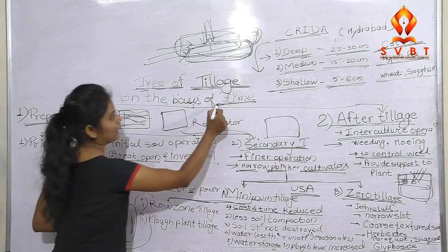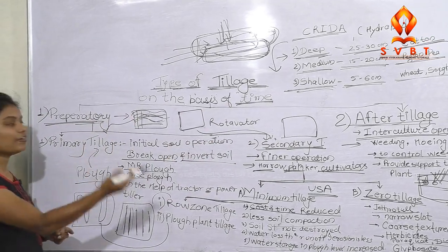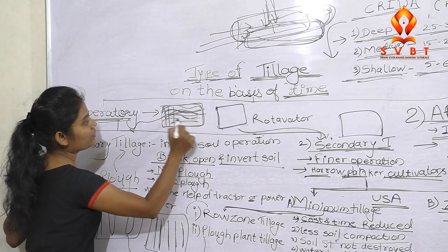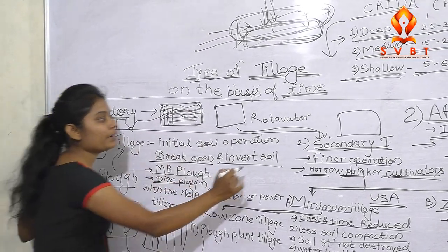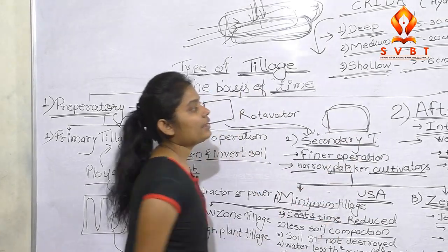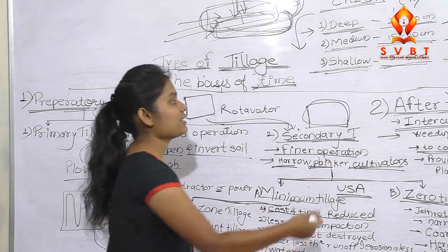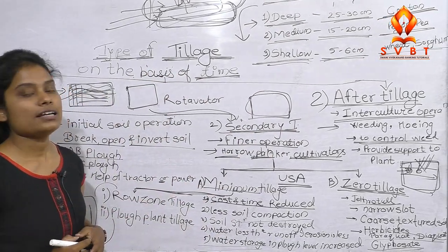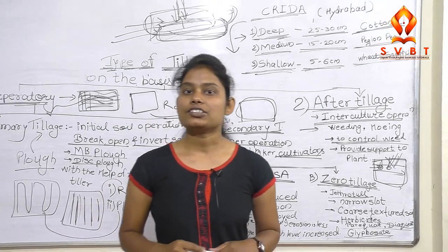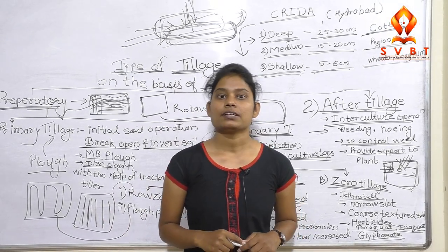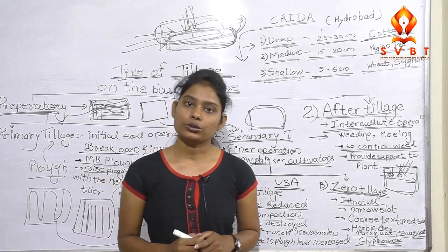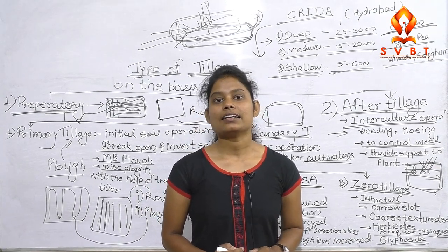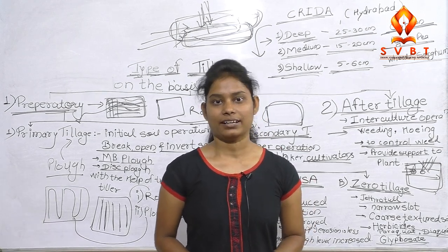So we have the classification of tillage on a time basis: preparatory and after tillage. The soil is fine for primary tillage, seedbed preparation is secondary tillage, and crop stand care is after tillage. So we have the same type of objectives. If you liked this video, please like this video and subscribe to our channel. Thank you.